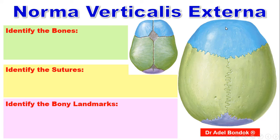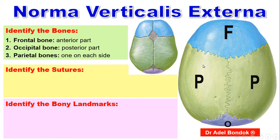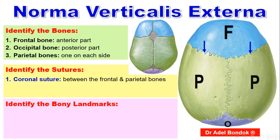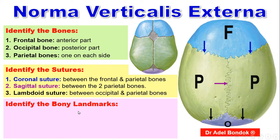Regarding Norma verticalis: we have three bones — the frontal bone forming the anterior part, the occipital bone forming the posterior part, and the two parietal bones, one on each side. There are three sutures: the coronal suture between the frontal and parietal bones, the sagittal suture between the two parietal bones, and the lambdoid suture between the parietal and occipital bone.